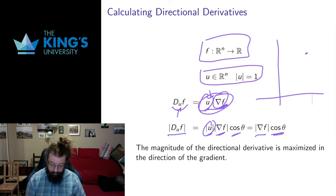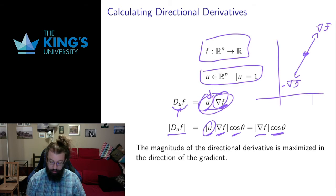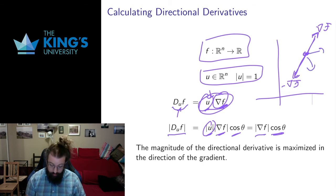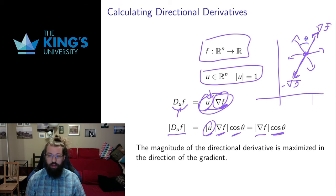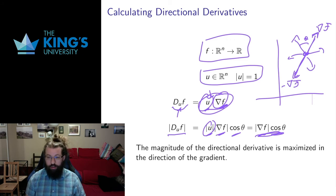In R2, if I have some point where the gradient points one way, the negative gradient points the other way. If this is temperature, the temperature increases most quickly in the gradient direction and decreases most quickly in the negative gradient direction. For other directions, they have some angle theta between them and the gradient, and that angle tells us how quickly the scalar field is increasing or decreasing — the magnitude of that rate of change.